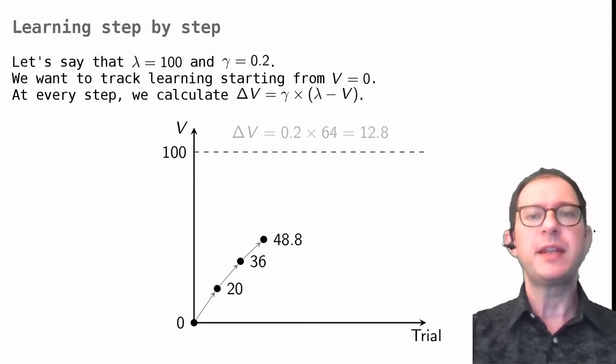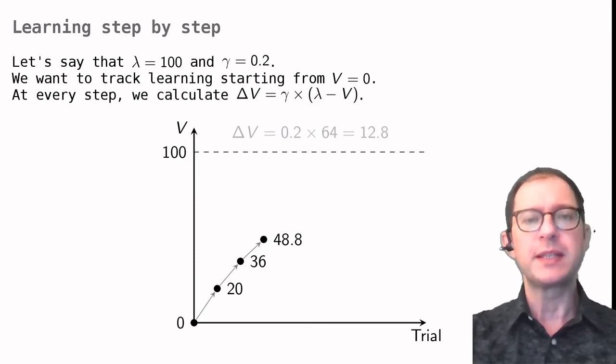At this point, the numbers start to get ugly, but the procedure is always the same. We can track V, our associative strength, at each experience of the CS paired with the US.